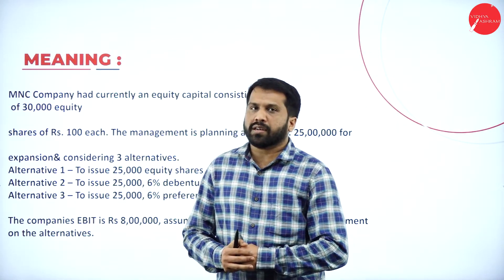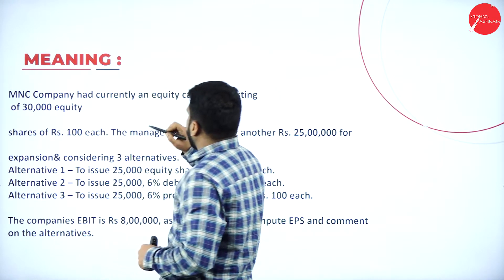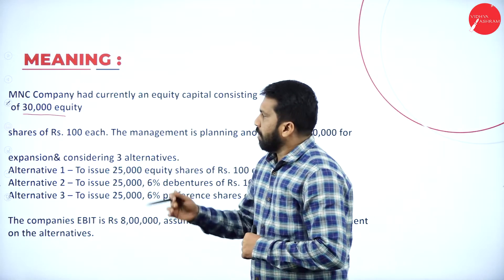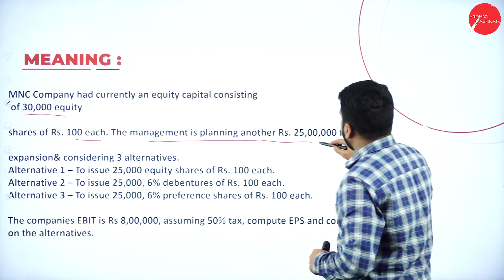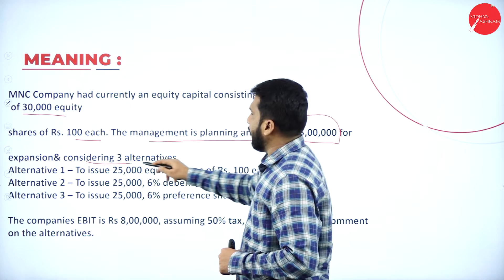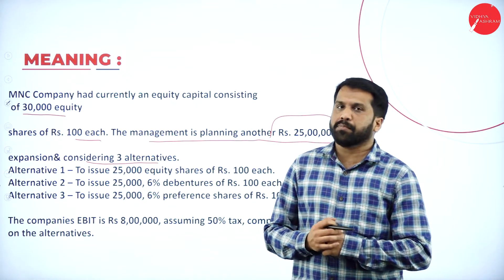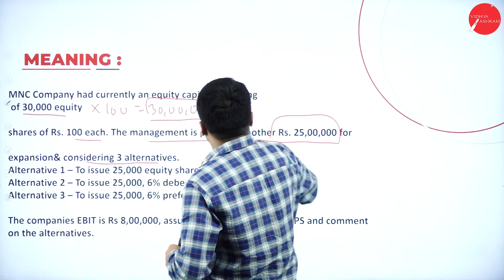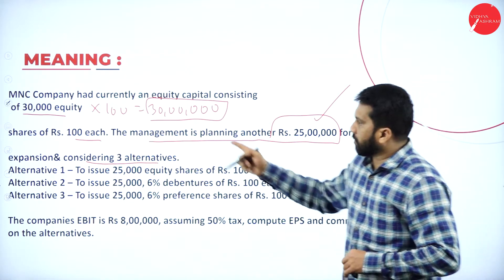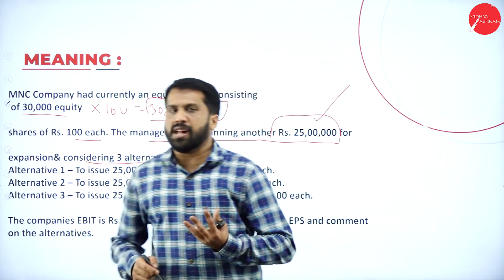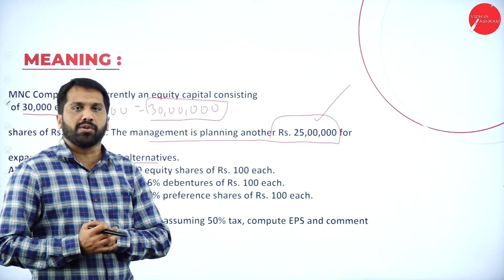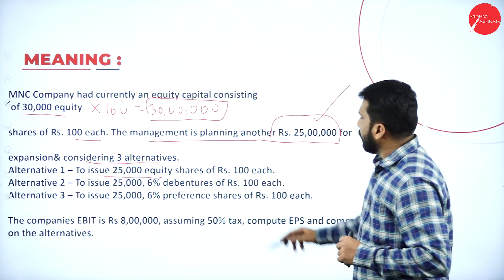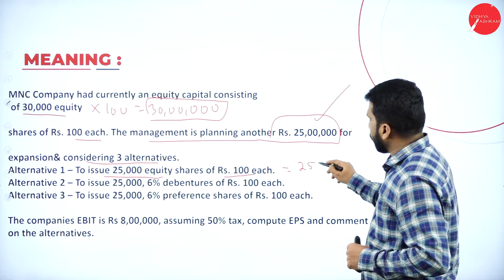This is your first problem on capital structure. MNC company currently has equity capital consisting of 30,000 equity shares of rupees 100 each — that is 30 lakh already. The management is planning to raise another 25 lakh rupees for expansion and is considering three alternatives. We are talking about the 25 lakh needed for expansion, not the existing 30 lakh.